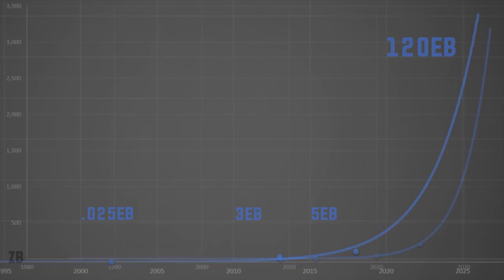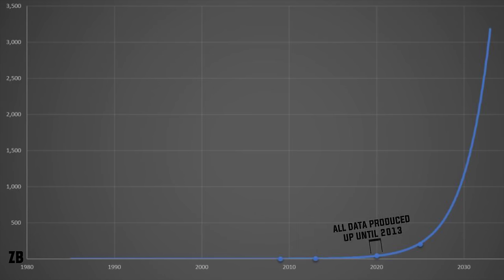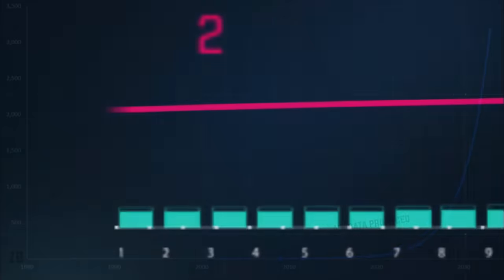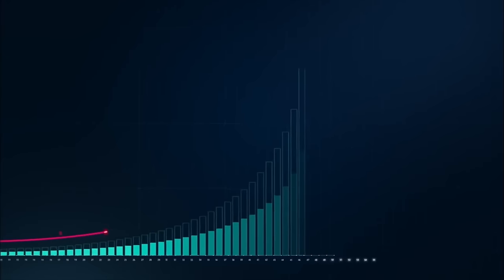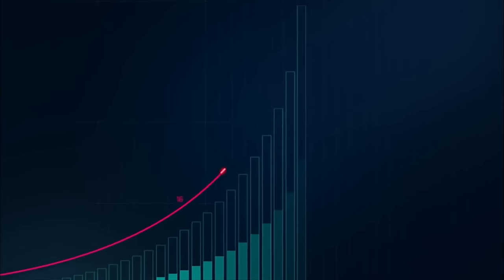To put these numbers in perspective: in 2013, 90% of all data the human race had ever accumulated was produced between 2010 and 2013. At our current rate of growth, by 2020 the same quantity of data produced up until 2013 will have been created in just that single year alone. Our data production is on an accelerating exponential trend with no end in sight.